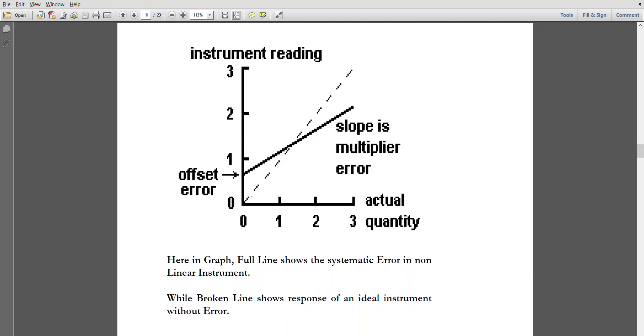But due to some error, the line has shifted from 0 to offset error. If you see, this is claimed as an offset error and what is happening here is a change in slope. What is changing? There is change in the slope.